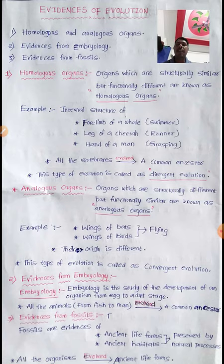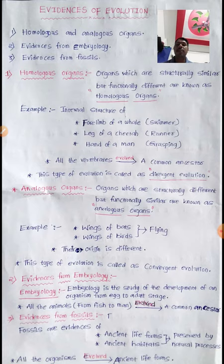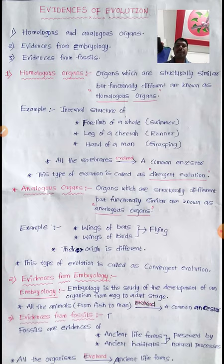This type of evolution is called divergent evolution. To recap: homologous organs are those which are structurally similar but functionally different. The internal structure — that is, the arrangement of bones — of the forelimb of a whale, leg of a cheetah, and hand of a man is the same, but their functions are different. Those are the homologous organs.